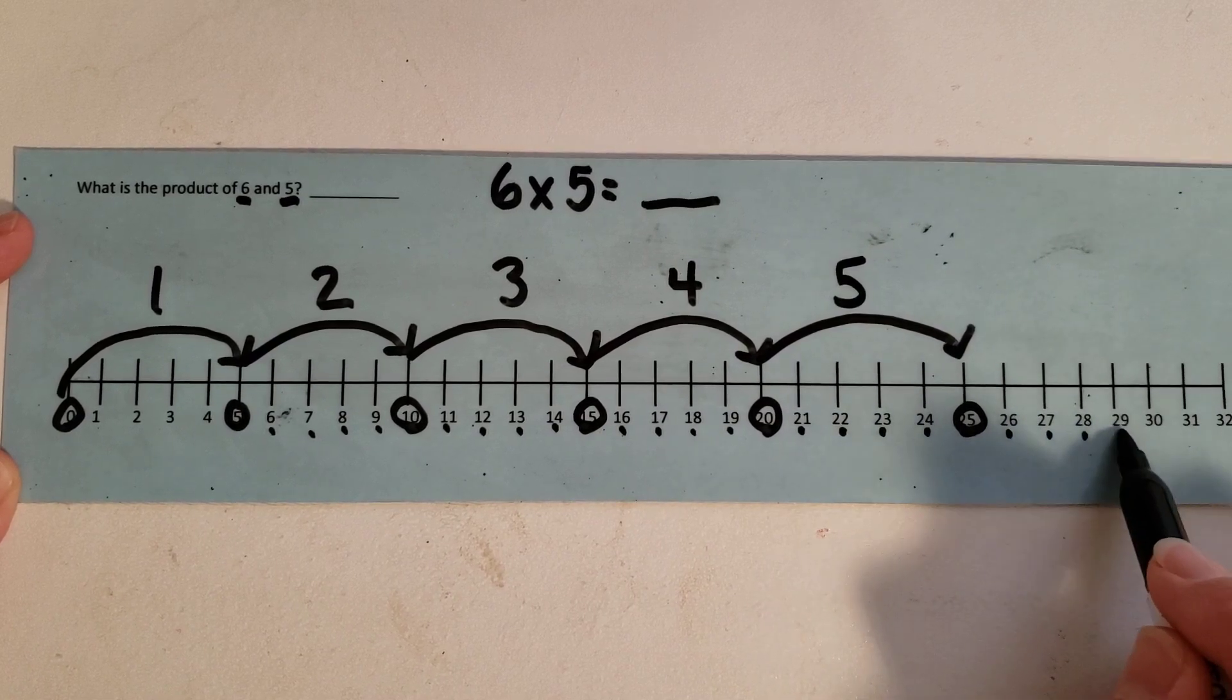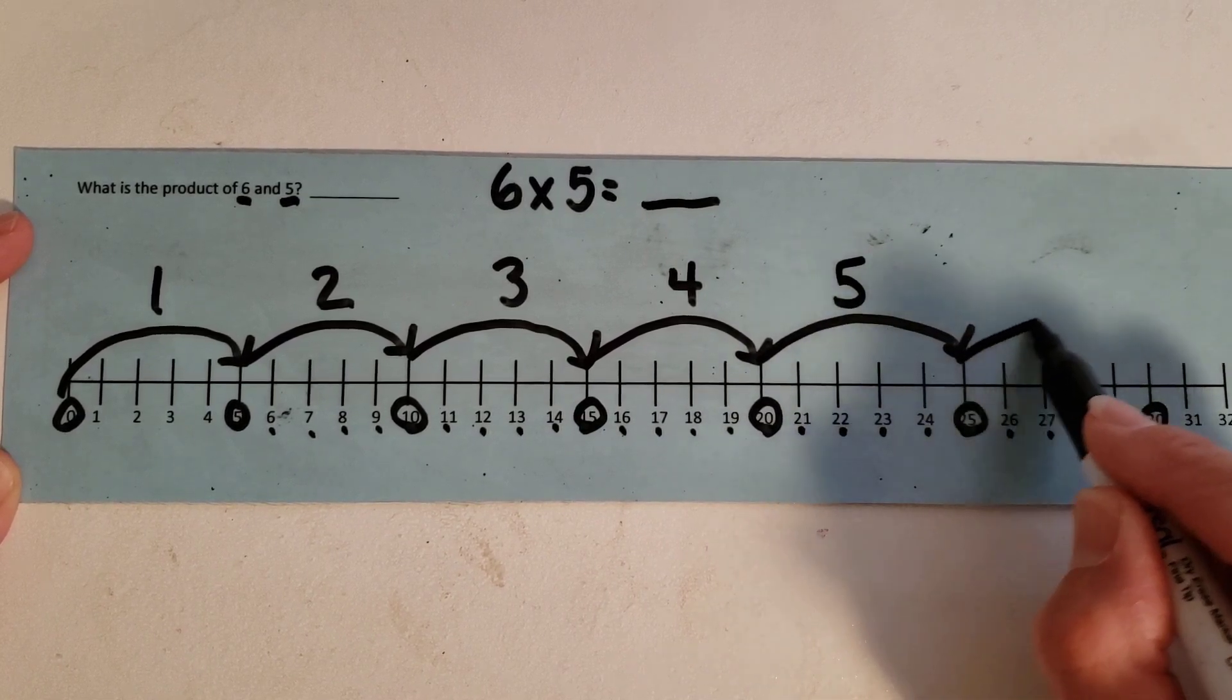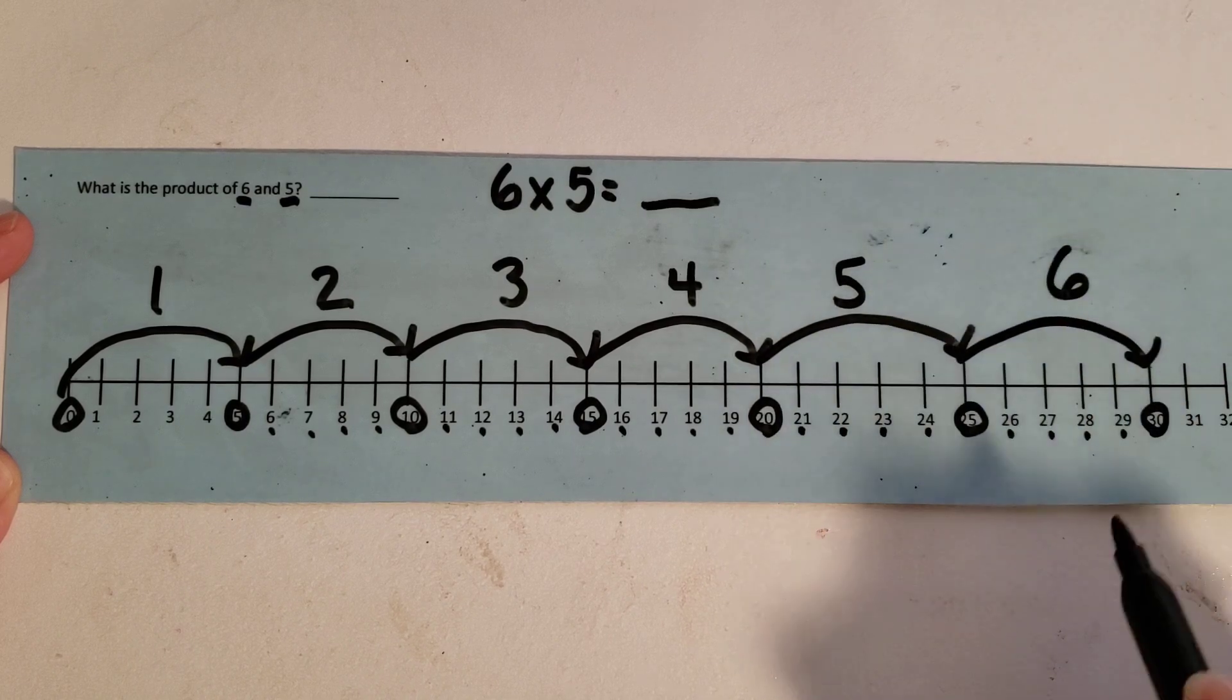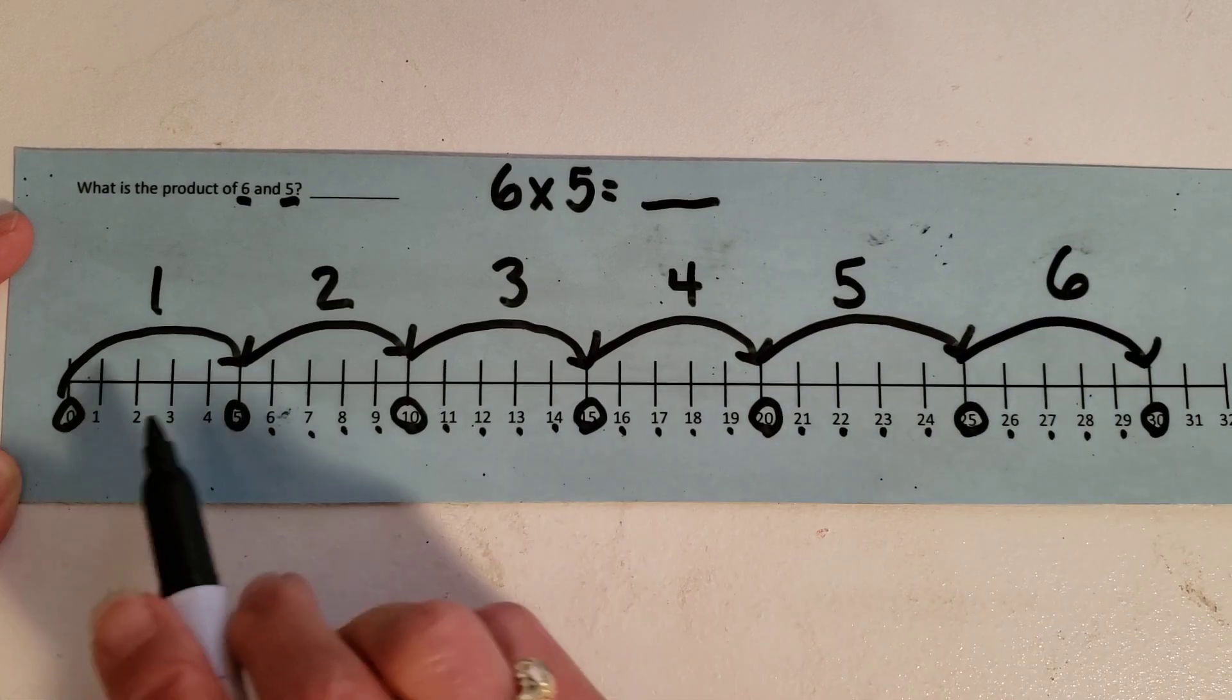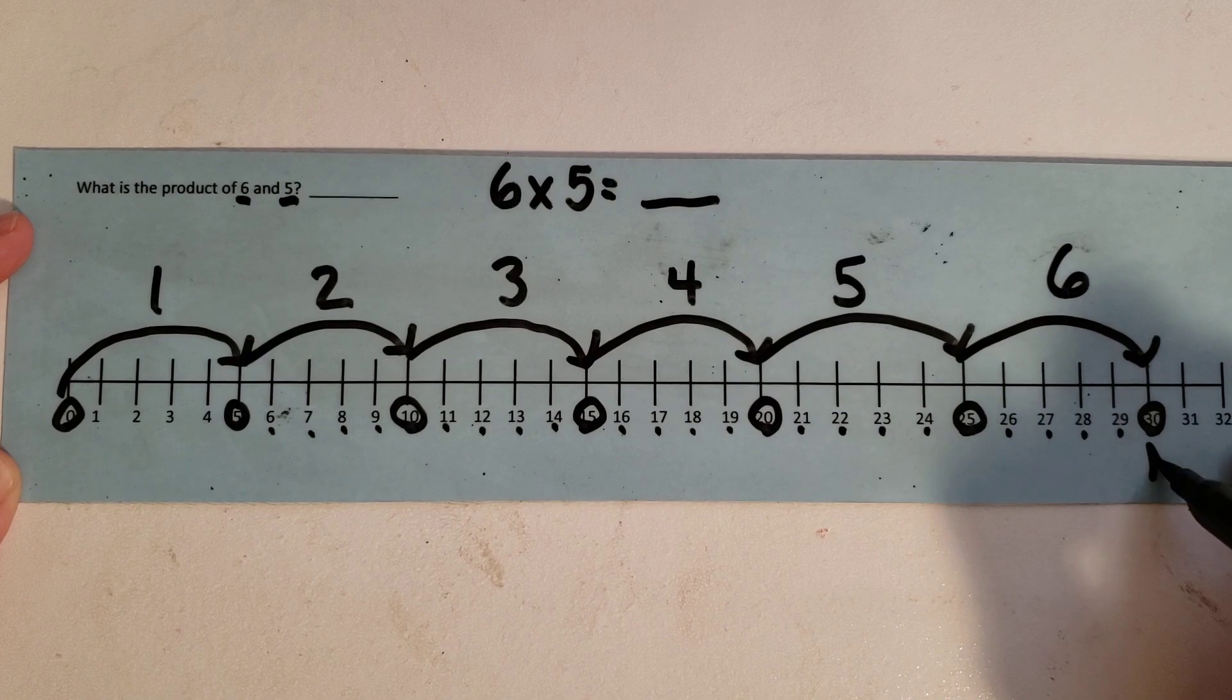One, two, three, four, five. So here is my sixth group of fives or my six hops. I see that I landed on 30.